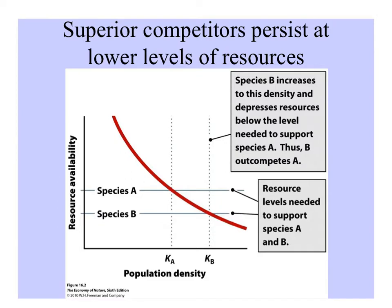The superior competitor can persist when resources are more limited, so if the weaker species needs more resources to survive. In this example, species B is able to survive and outcompete A when resources are limited.